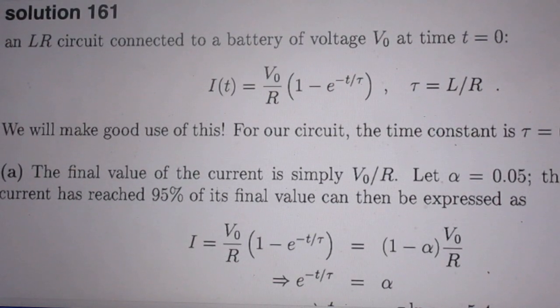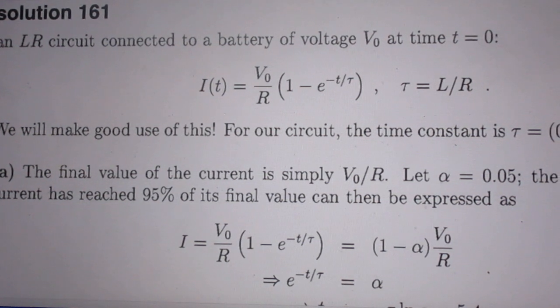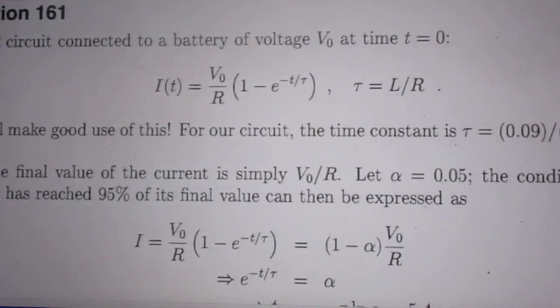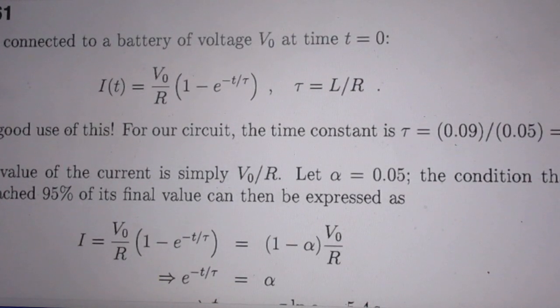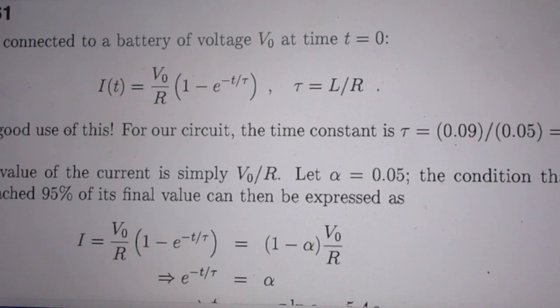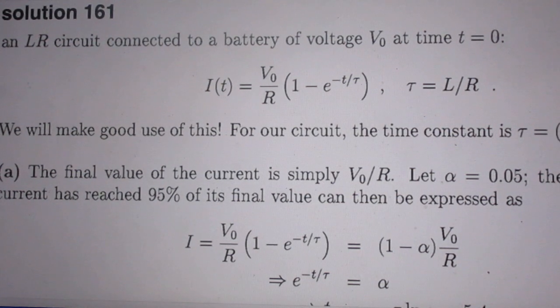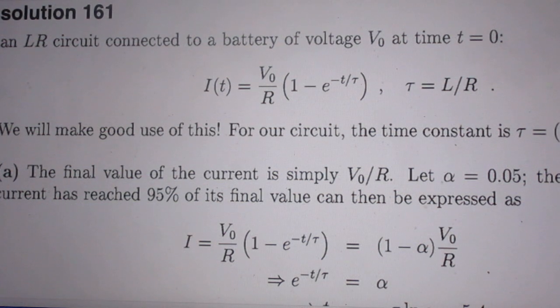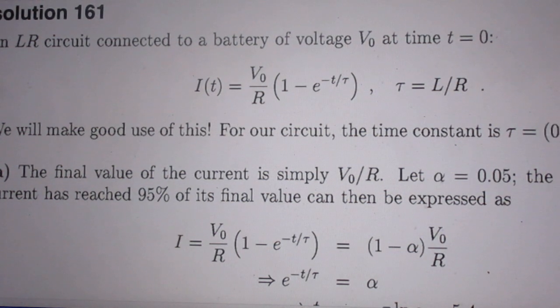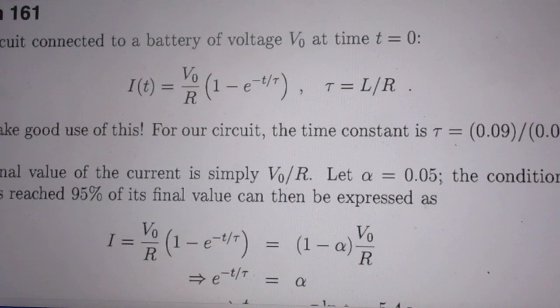So A. The final value of the current is simply V0 over R. And alpha is 0.05. It is the condition that current has reached 95 percent of its final value, which can then be expressed in the following way.